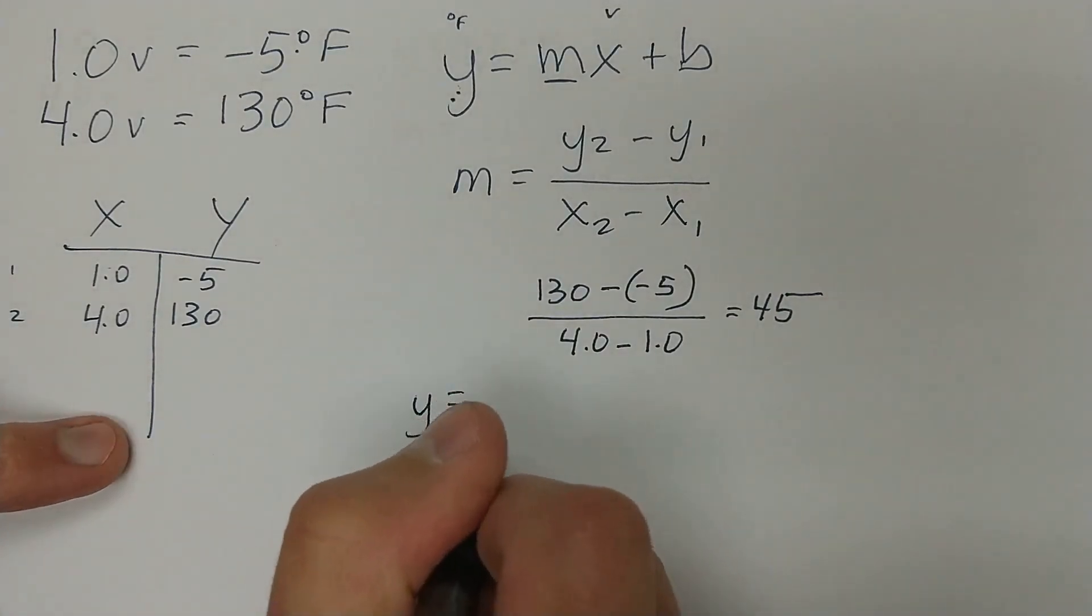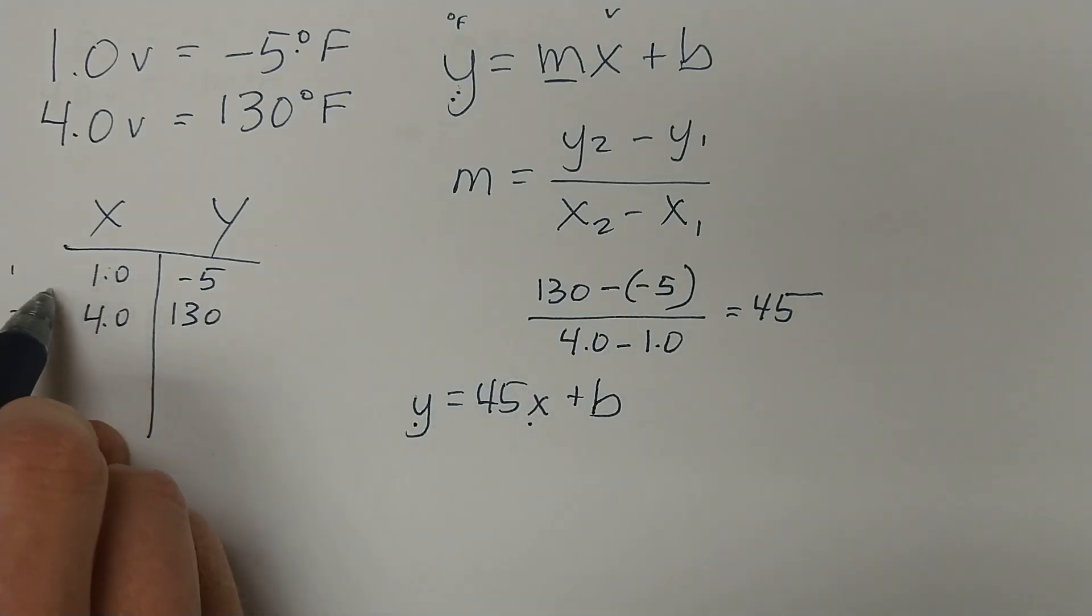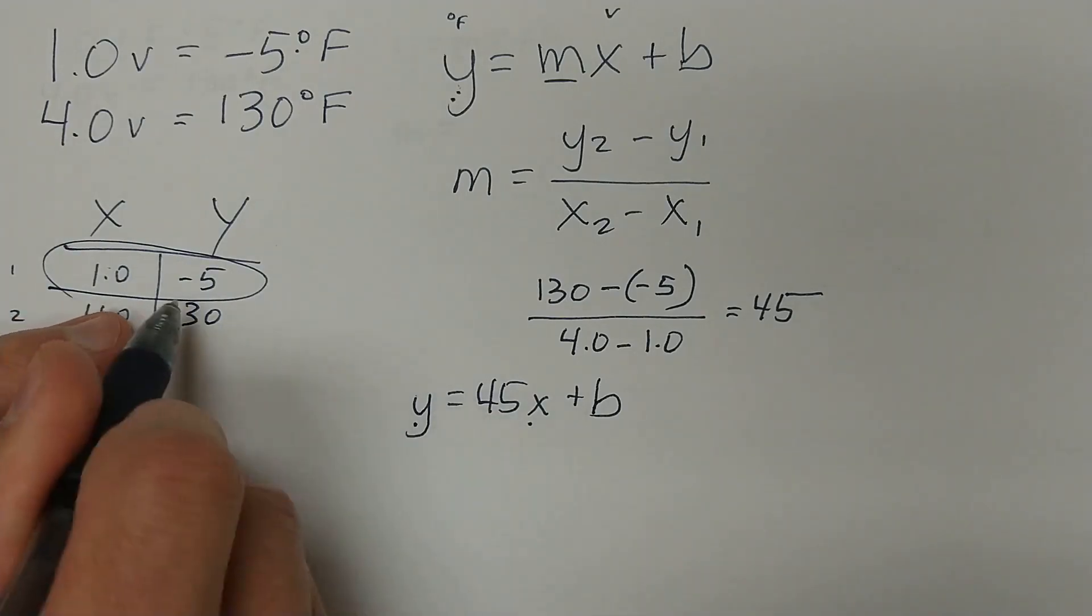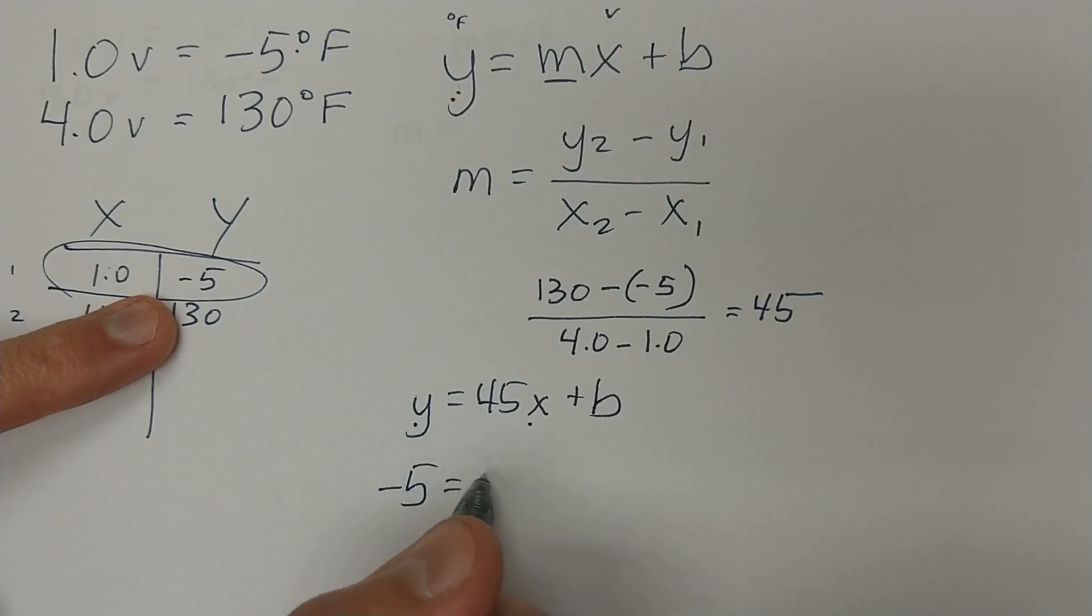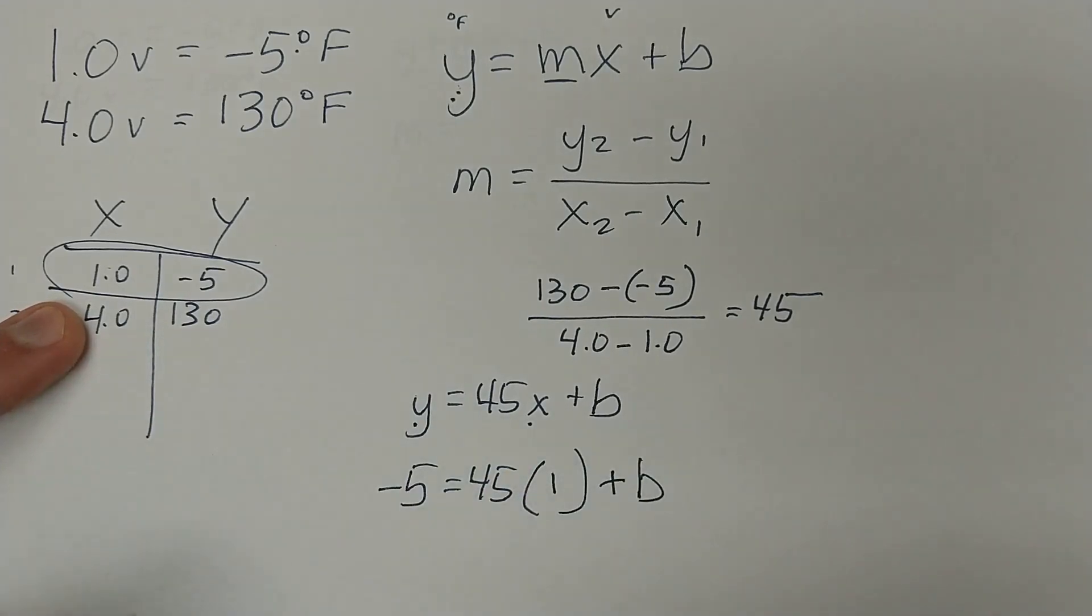So we can now say Y equals 45X plus B. Okay, X is going to be the voltage we plug into it. Y is the result, but we don't know what the B is, so we need to solve for B. And we do that by plugging in one of these data sets. So we can take this first data set and plug this in. Y equals negative five. So negative five equals 45 times X, which is one, plus B. So we'd multiply 45 times one and say, okay, 45 plus something equals negative five. And in this case, it's pretty easy to see that that would be negative 50. Right? So the formula we ended up coming up with, the final result of all of this, is Y equals 45X minus 50.